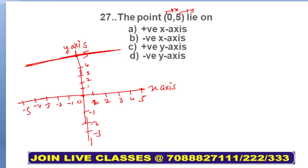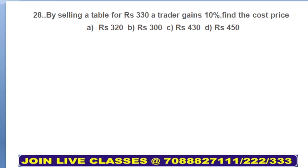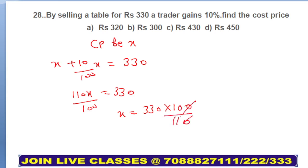Moving on to next: by selling a table for rupees 330, a trader gains 10%. Find the cost price. CP be x, gain 10%, that means 10 upon 100 x equals 330. CP plus profit is SP. This will be 100x + 10x upon 100 equals 330. x comes out to be 330 into 100 upon 110. Cancel out 0, it's 11×3, your answer comes out to be rupees 300 which is your CP. So your answer is option B, rupees 300.